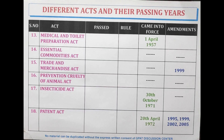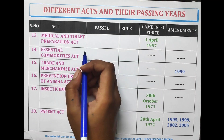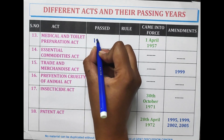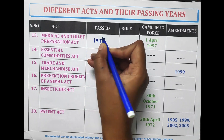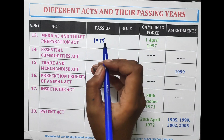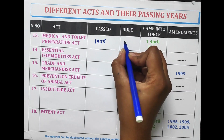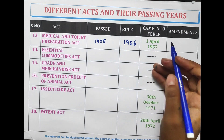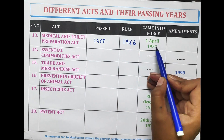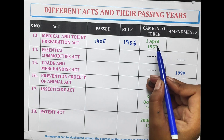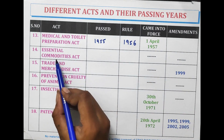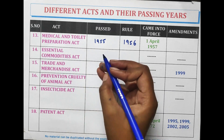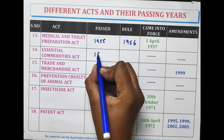The Medical and Toilet Preparation Act was passed in the year 1955 and the rules in 1956. It came into force on 1st April 1957. The Essential Commodities Act was passed in 1955.